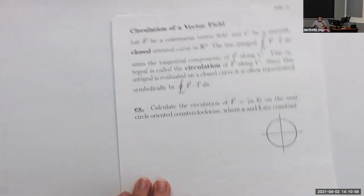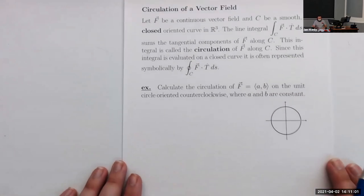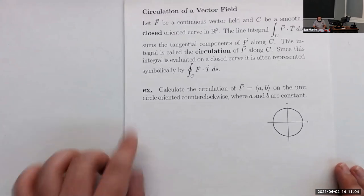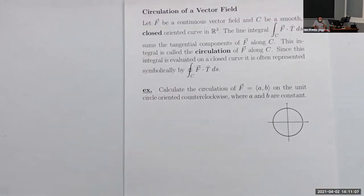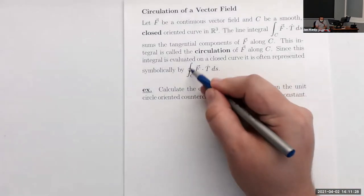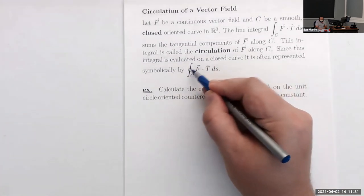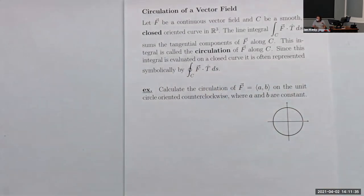Let f be a continuous vector field and c be a smooth closed oriented curve in ℝ³. The line integral f dot T ds sums the tangential components of f along c; this integral is called the circulation of f along c. Since this integral is evaluated on a closed curve, it's often represented symbolically with the line integral symbol with a little circle on it. If you see that circle on the line integral symbol, it implies the curve is closed.